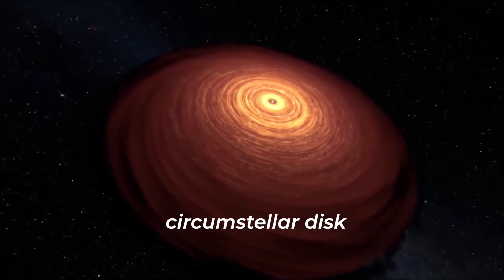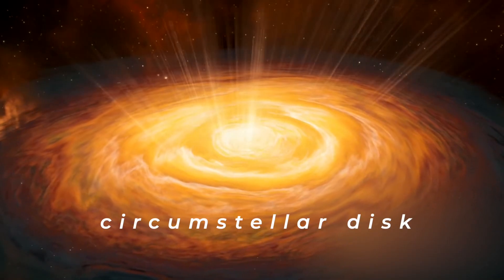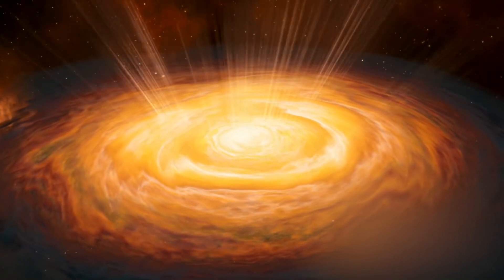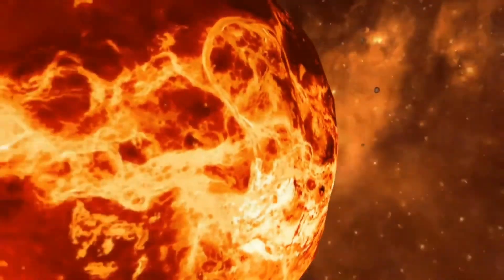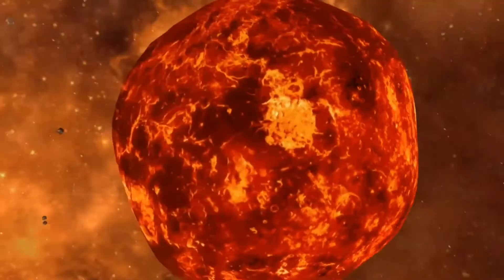After a T Tauri star collapses down from its stellar nursery, some of the leftover gas and dust will collect into a wide, flat ring known as a circumstellar disk. The disk is the source of material for new planet formation.